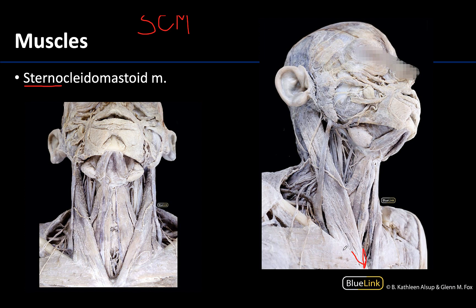Kleido means clavicle, referring to its attachment to the medial third of the clavicle. Mastoid indicates the superior attachment of the muscle to the mastoid process, heading up into this region here. The mastoid process is part of the temporal bone — that bump you can feel right under your ear. The superior attachment will also wrap around to the superior nuchal line.